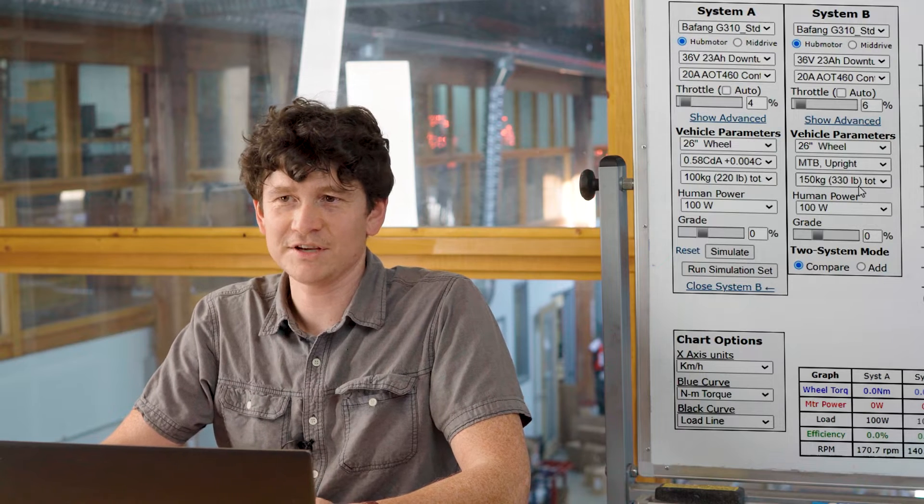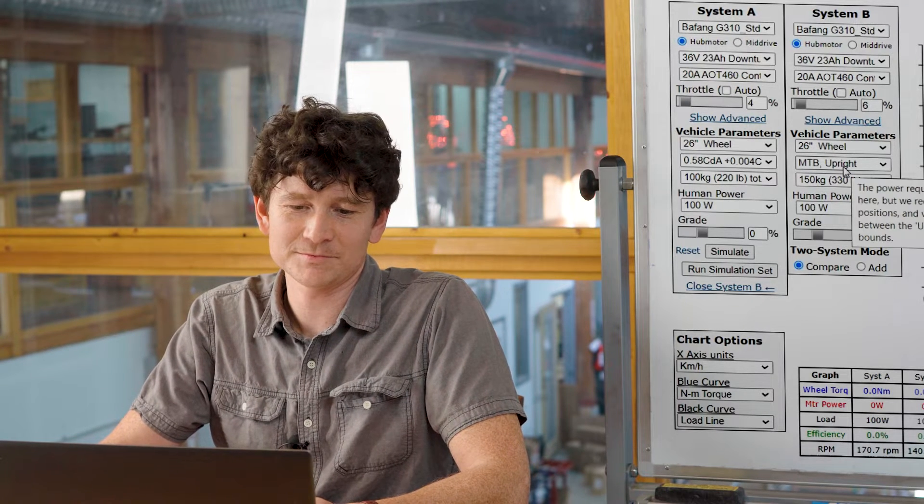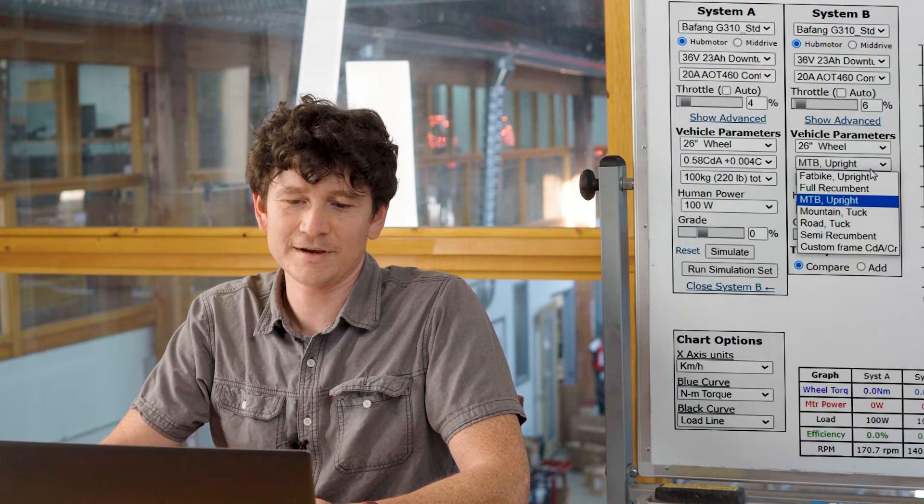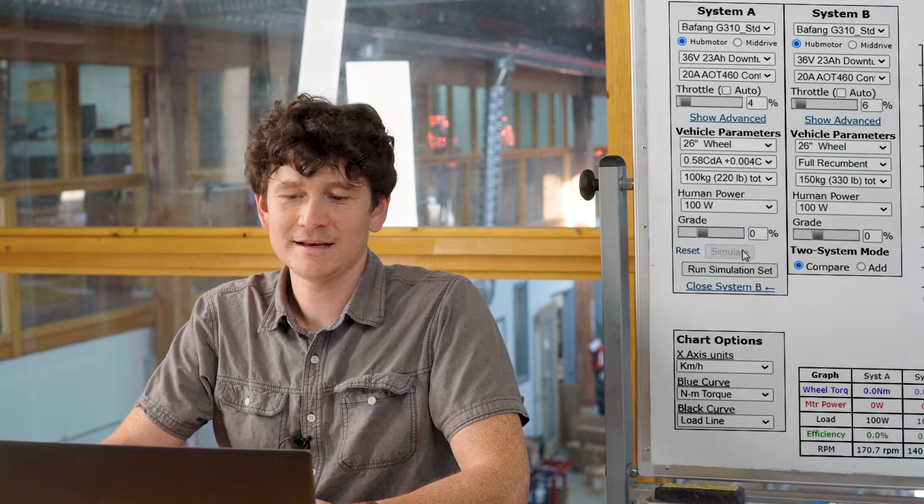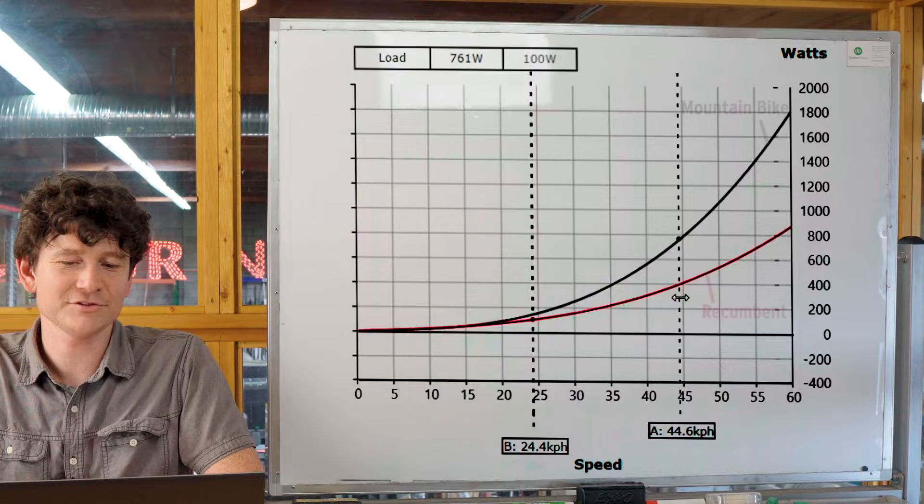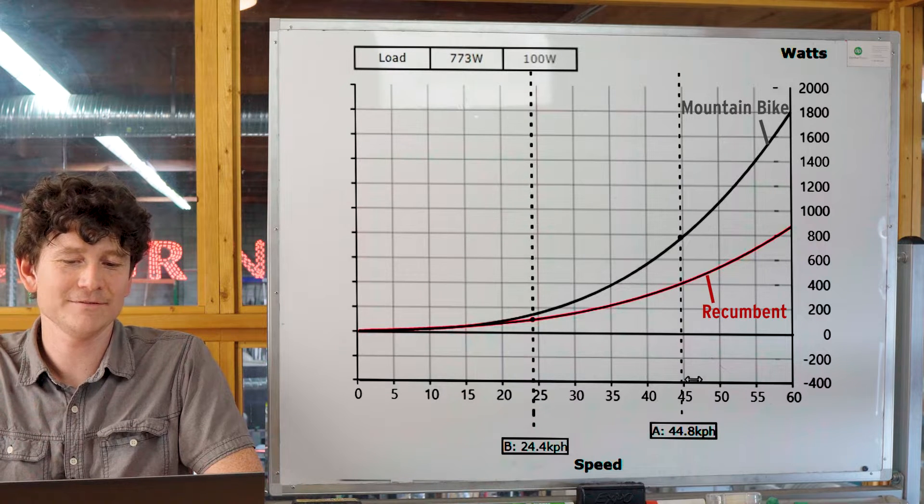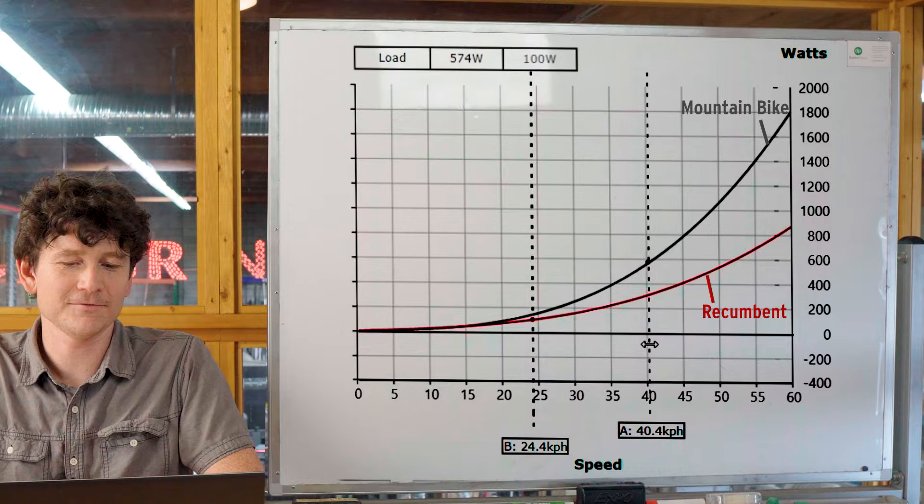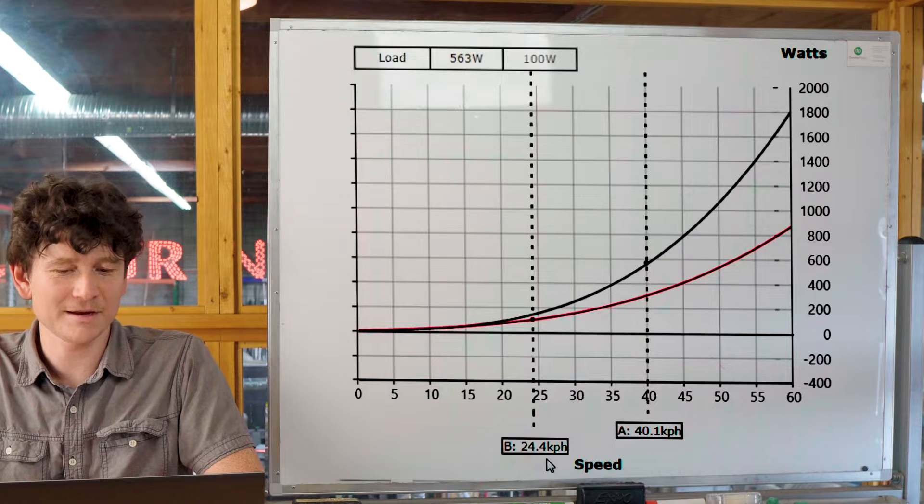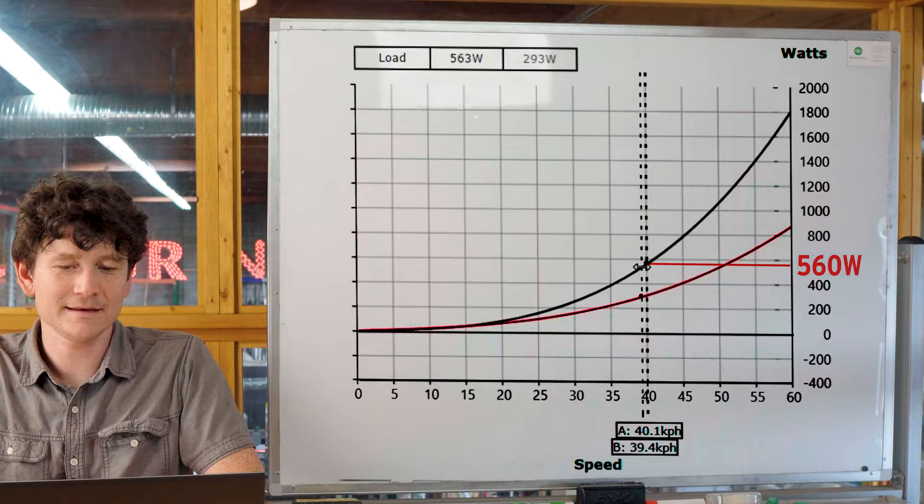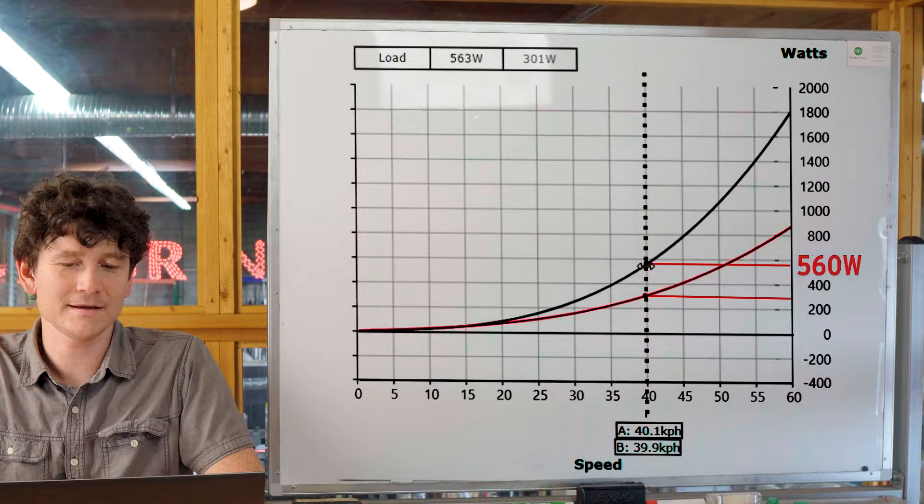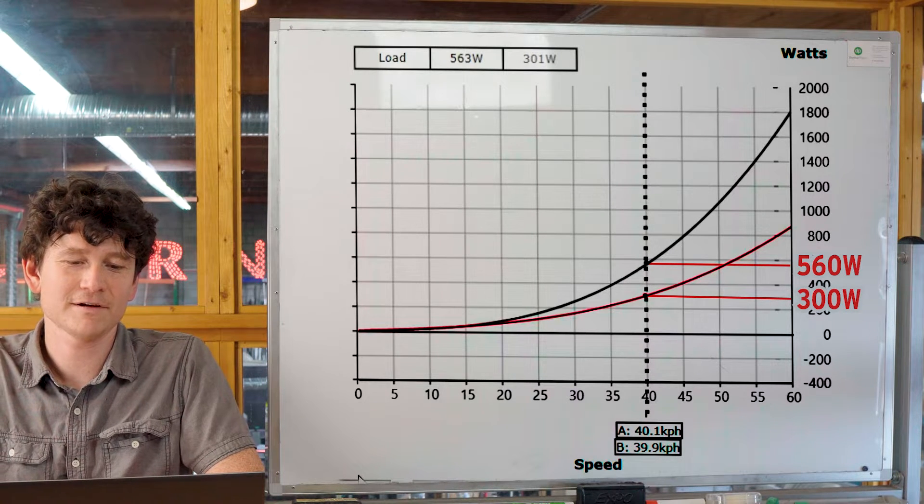Instead of changing the weight, if we look at changing the aerodynamics, we expect a much more significant variation. If I go from an upright mountain bike to riding in a full recumbent vehicle, now you can see a very dramatic shift in the amount of power needed to go at any given speed. If we compare the plot at 40 kilometers an hour, the upright bike needs 560 watts and the recumbent bike is only 300 watts, roughly half as much.